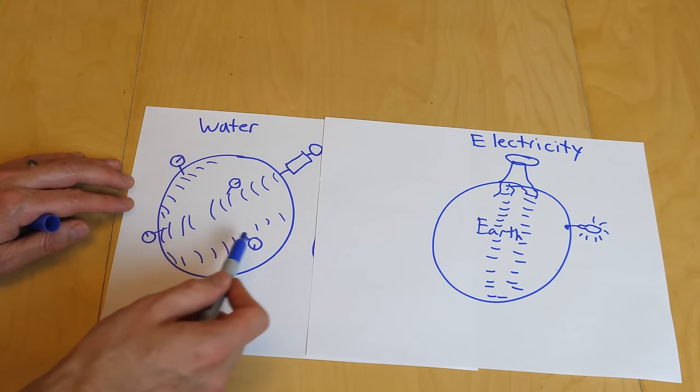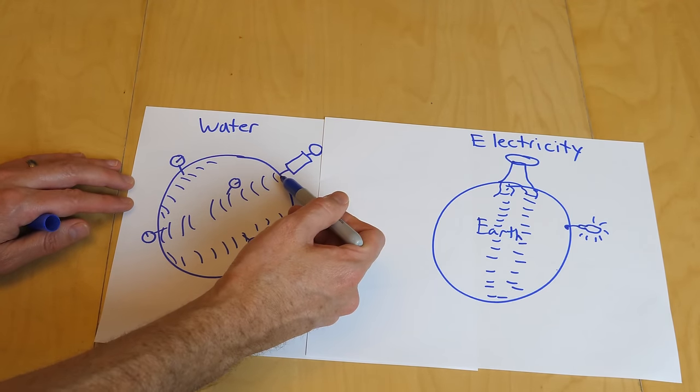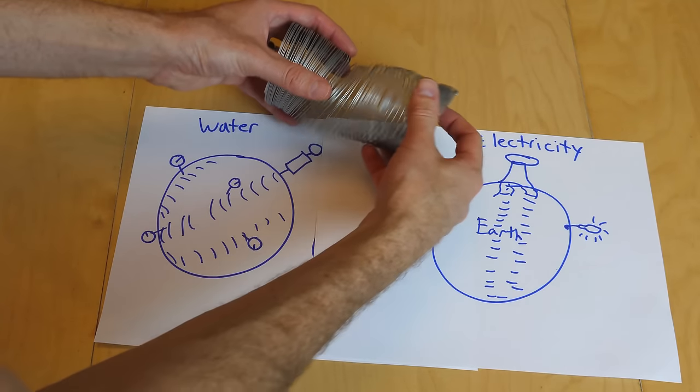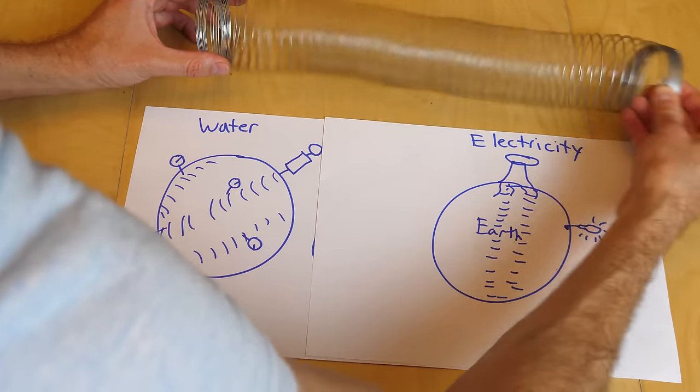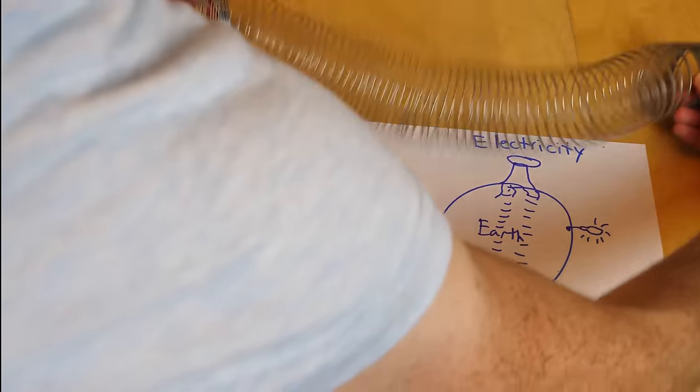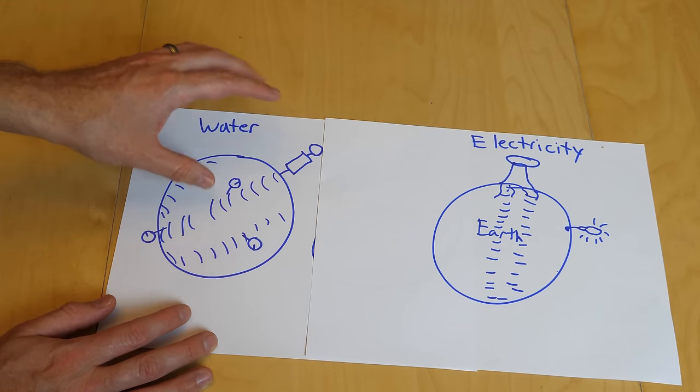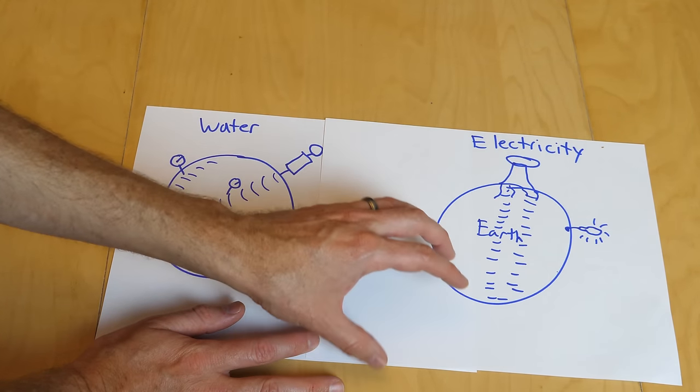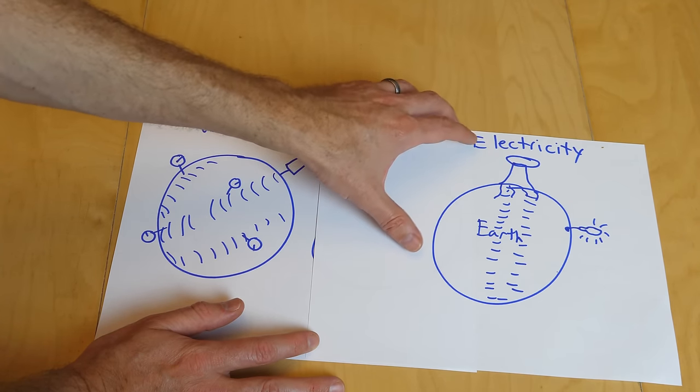But the problem with this analogy is this one used water, but this one uses electricity. Water can have longitudinal waves, but electricity cannot. And if you've never heard of a longitudinal wave, basically this is a longitudinal wave. And this is a transverse wave. So the transmission of pressure waves or sound through solids or liquids can be transverse and longitudinal. But the transmission of electromagnetic waves through a solid or through just total vacuum is always transverse and never longitudinal.